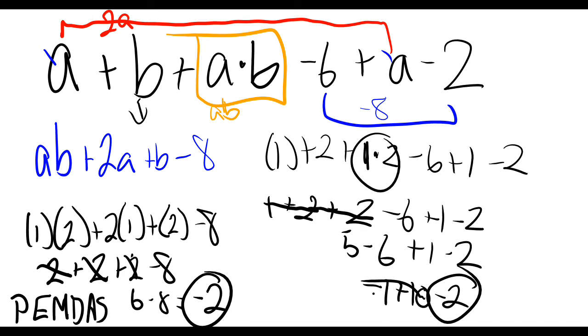So overall, our simplification checks out. Again, you can pause, go back anytime you need to. We get our negative 2.